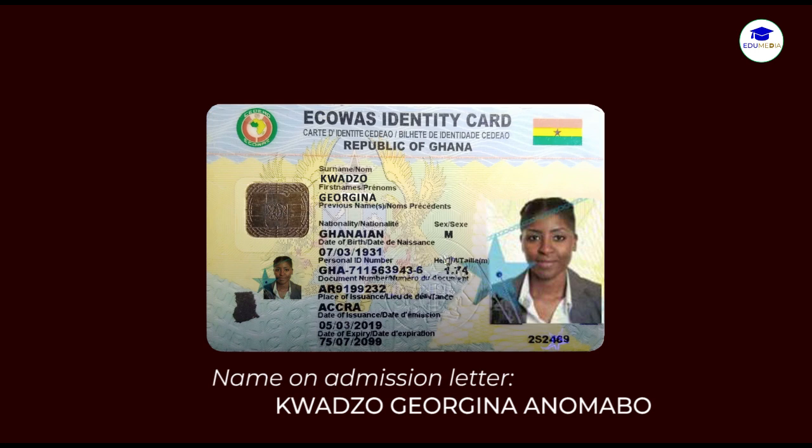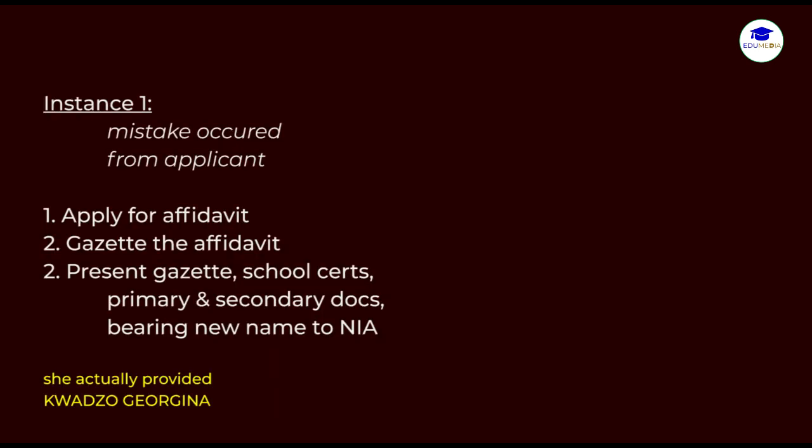For Georgina to have her name on the Ghana Card changed to match her admission letter, there are two instances. The first instance is that if Kwajo Georgina actually provided primary documents such as a birth certificate or passport bearing the name Kwajo Georgina to the NIA for registration, and that same name appeared on the Ghana Card, she will need to first apply for an affidavit from the High Court notifying the court that she wishes to be known and called Kwajo Georgina Anomapo. The second thing is to gazette the said affidavit, and then the third thing is to present the gazette, her school certificate, a primary document such as the birth certificate or passport she used, or secondary documents such as any other ID card bearing the name Kwajo Georgina Anomapo to the NIA office for the correction.